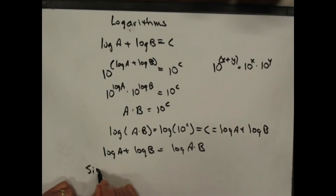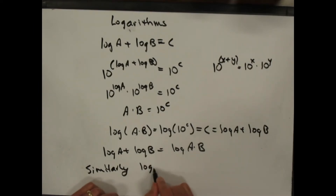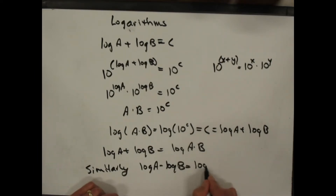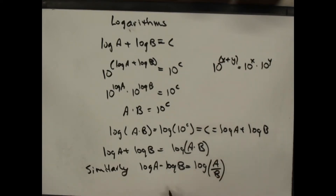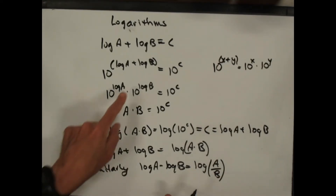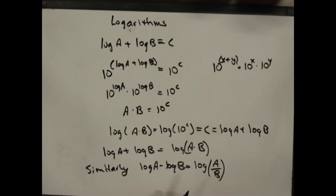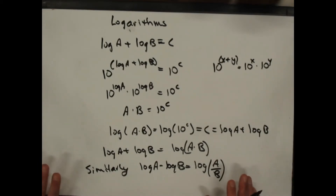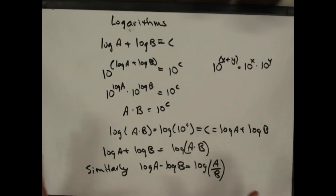Similarly, log of a minus log of b is log of a over b. I'll let you prove that one to yourself — it just has to do with putting a minus sign in there. That's a little bit of logarithm identity that you might need to solve some of these decibel problems. You should either review it on your own, or come see me for help if you need to.